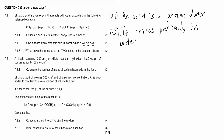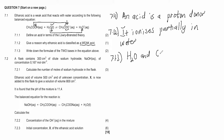Question 7.1.3 says write down the formulae of the two bases in the equation. We identify our acid-conjugate base pairs: the two bases are H₂O and CH₃COO⁻.